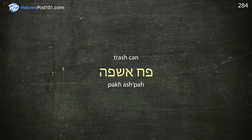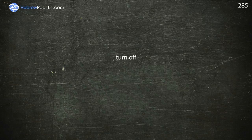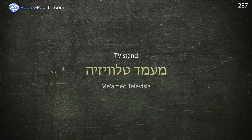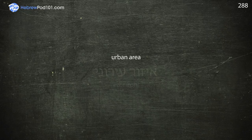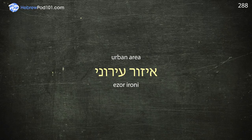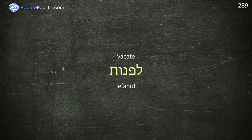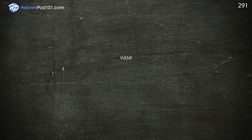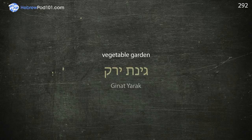Turn off — Kiba. Turn on. TV stand — Meamed Television. Urban area — Azor. Vacate — Lepanot. Vacuum cleaner — Shoev Evac. Vase — Agartal. Vegetable garden — Ginat Yarak.